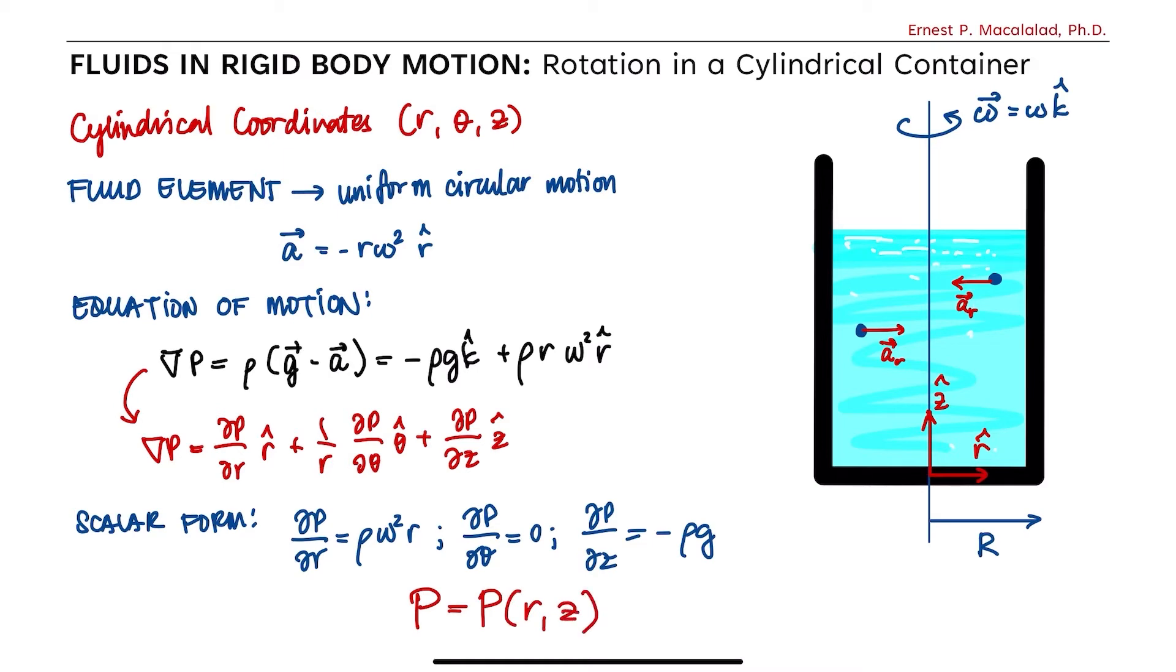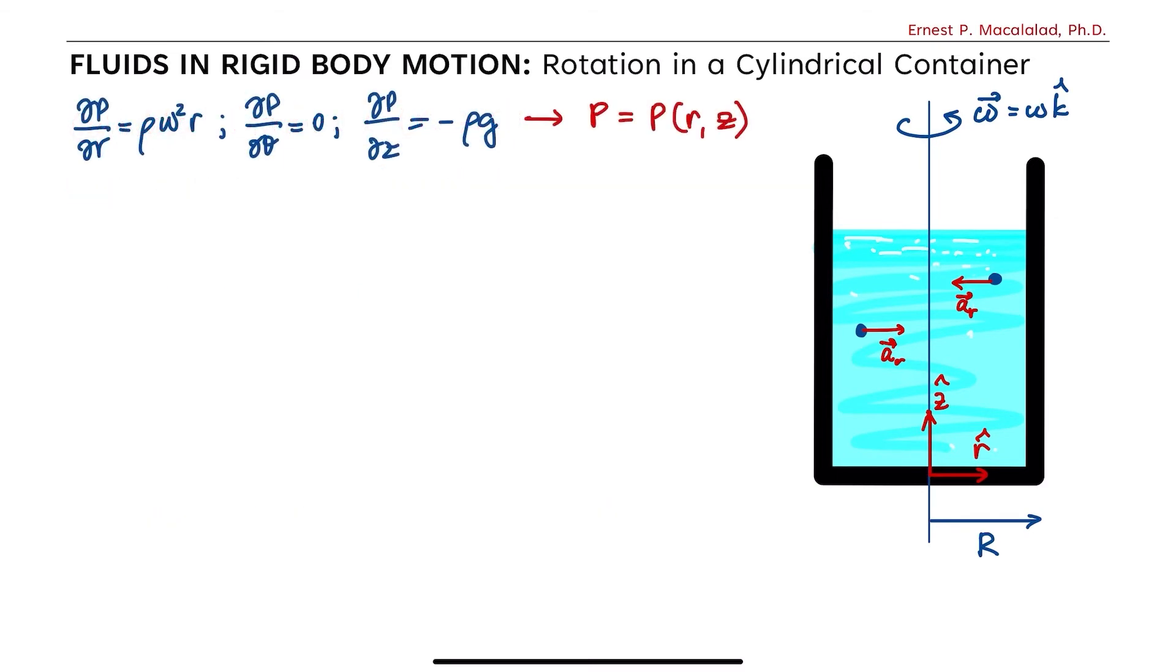This tells us that the differential of pressure becomes dp equals derivative of p with respect to r times dr plus derivative of p with respect to z dz, or rho omega squared r dr minus rho g dz. From our previous lesson, isobars are defined as points within the fluid whose pressure is constant. So therefore, the differential is zero.